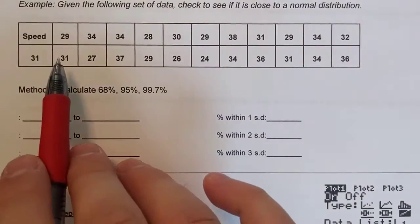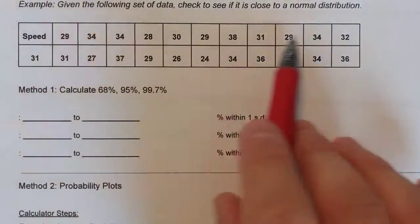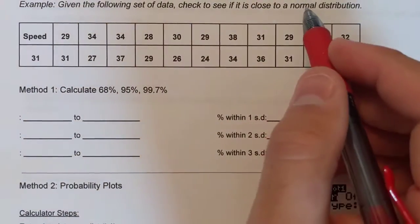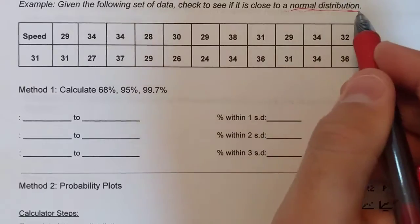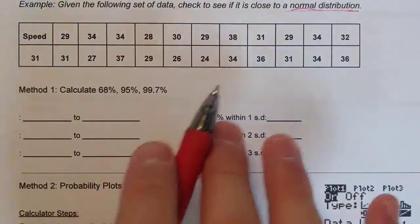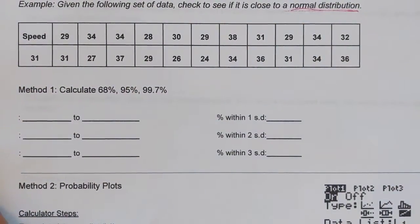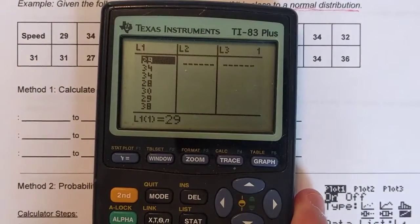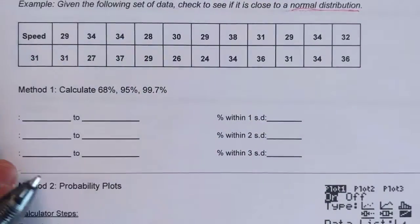So first let's look at the data here. We have speed data and we want to see if the data is close to a normal distribution or not. So the first method, we're going to type all this data into L1. So you press your STAT button, type everything into L1. It should look like that. This should be 23 data points.